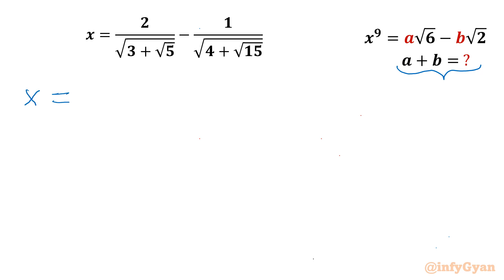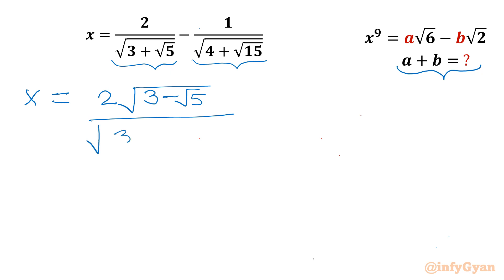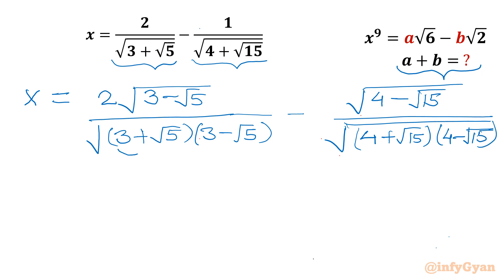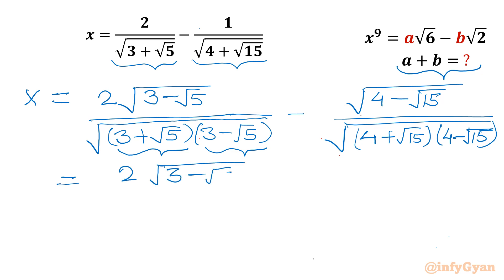I will write x. By the denominator's conjugate I will multiply in the numerator and denominator. So I will be writing 2 times the square root of 3 minus root 5, and in the denominator also root 3 plus root 5 times root 3 minus root 5. Now for the second term, I will multiply here with root 4 minus root 15. So in the denominator also I will write root 4 plus root 15 times root 4 minus root 15. Now you can see in the denominator it is a plus b times a minus b, so the difference of two squares formula will come into the picture.